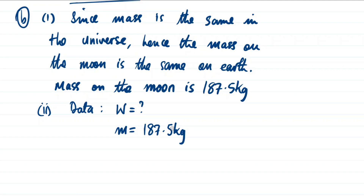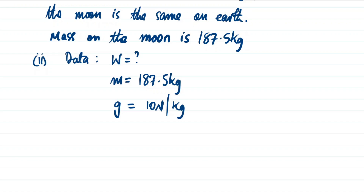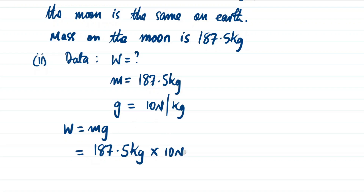We are looking for weight on earth, so we need the acceleration due to gravity on earth. In Zambia we use 10 newtons per kilogram — in other countries it is 9.8, but in Zambia we round it to 10. So in most Zambian textbooks, g = 10 N/kg. Our formula is: weight = mass × acceleration due to gravity. Substituting: W = 187.5 kg × 10 N/kg.